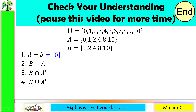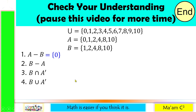Number 2: B minus A. We subtract the elements of set A — 0, 1, 2, 4, 8, 10 — from set B. Nothing would be left since all elements of B are also in A. So the answer is an empty set.